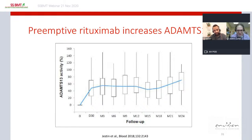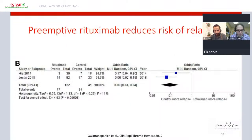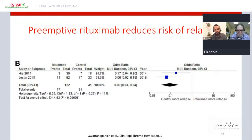The median ADAMTS13 level in patients with recurrent severe deficiency rises into the normal range after rituximab treatment. A systematic review and meta-analysis — based on two studies — showed that preemptive rituximab in patients in clinical remission with recurrent severe ADAMTS13 deficiency is associated with a strong reduction in relapse risk, with an odds ratio of 0.09 favoring rituximab.